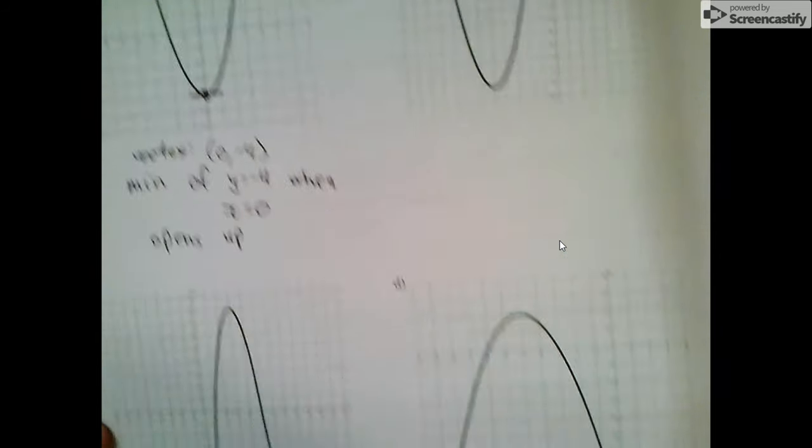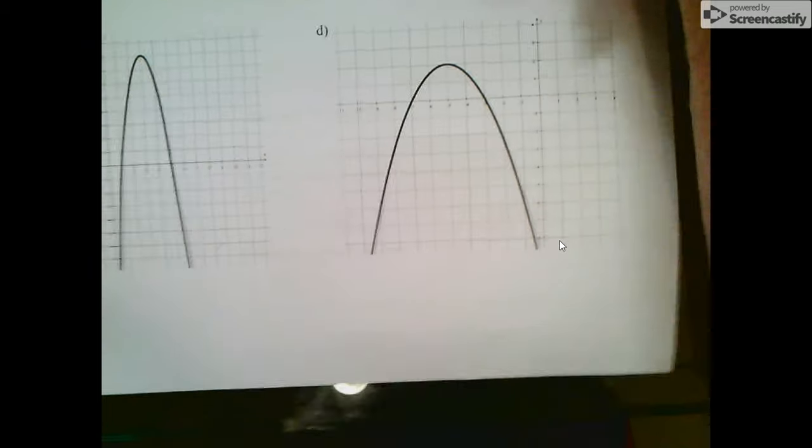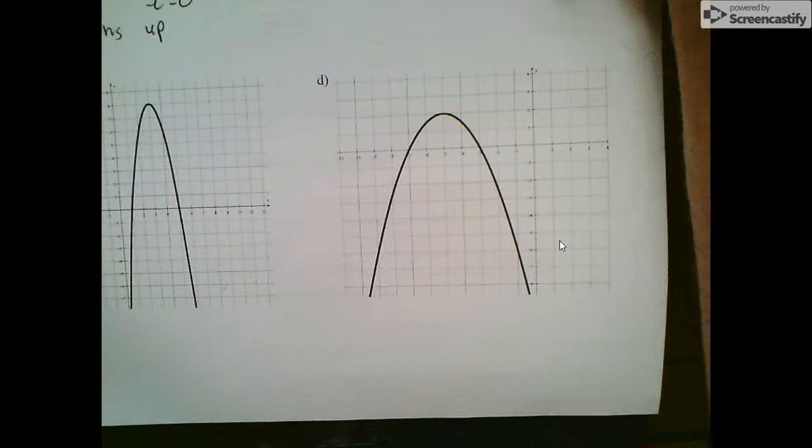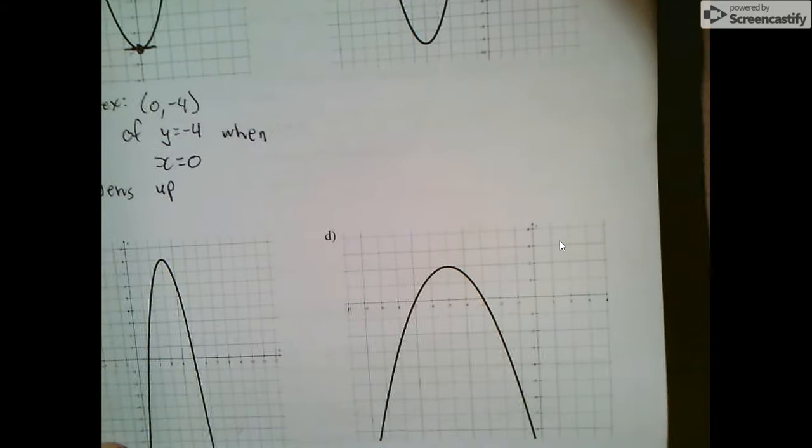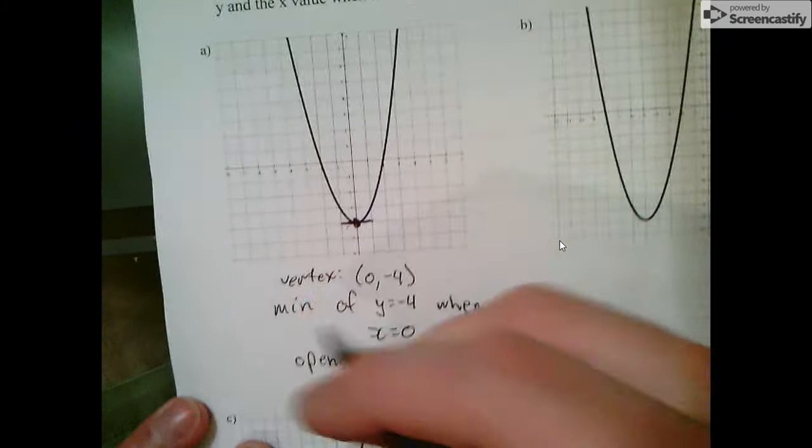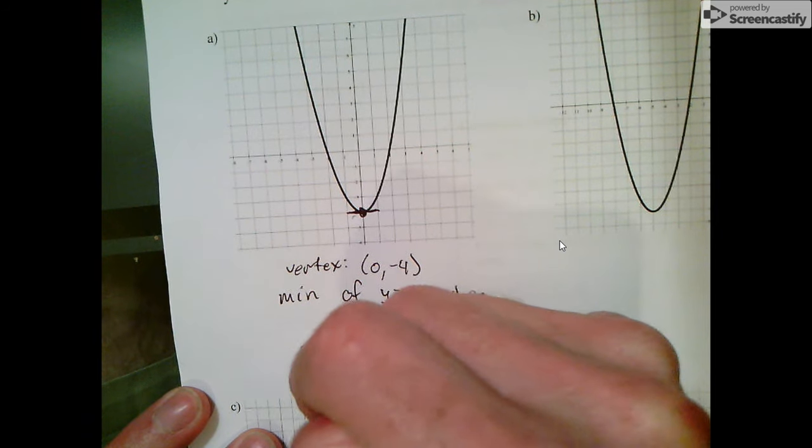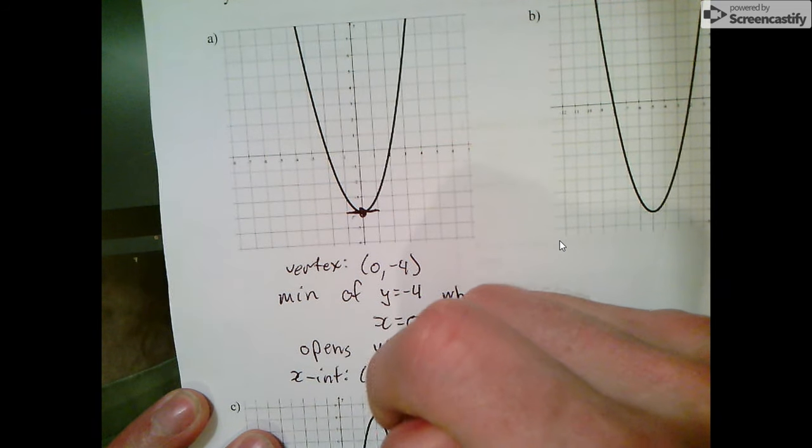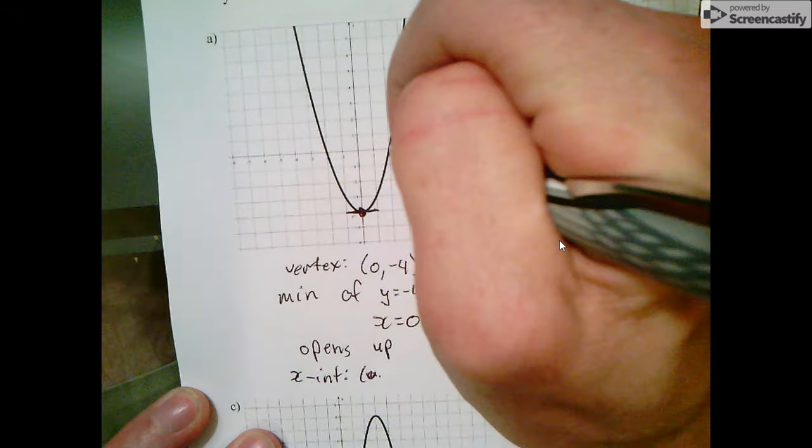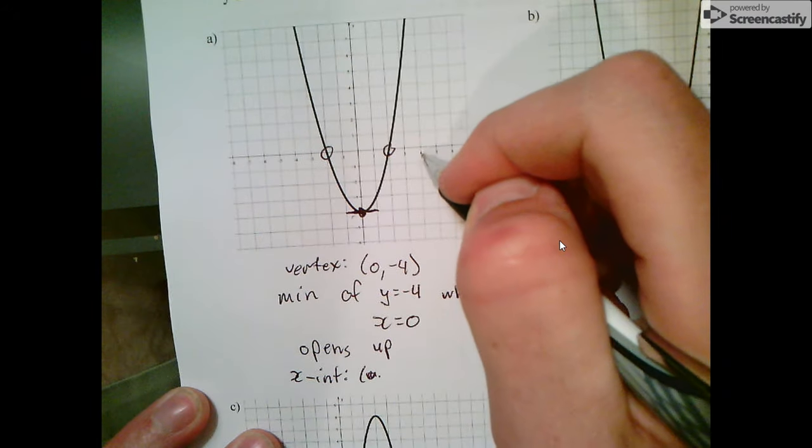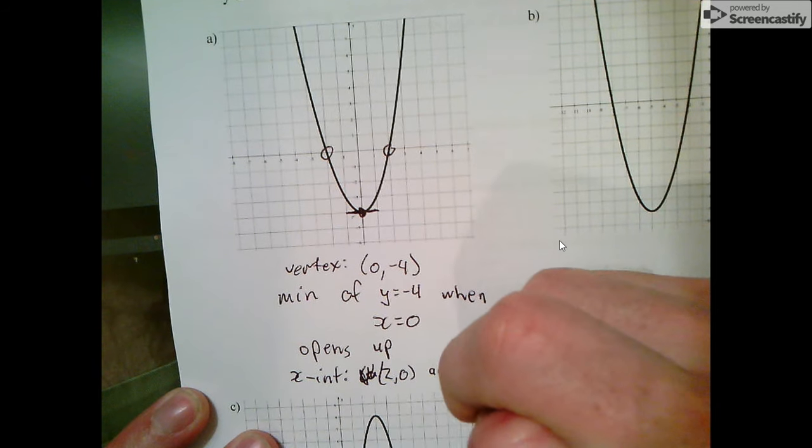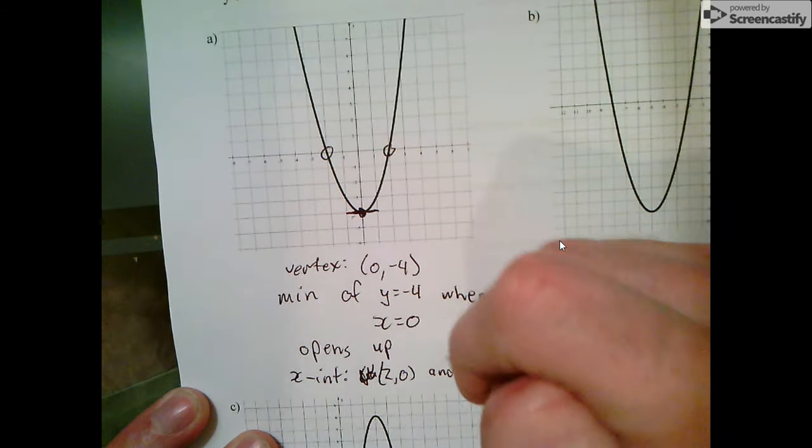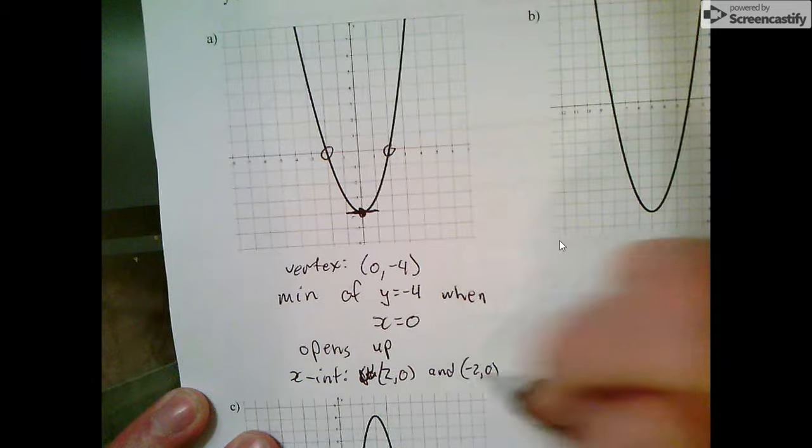Did I skip the x-intercepts? I did. The x-intercepts are right here and here. That's going to be (2, 0) and (-2, 0).